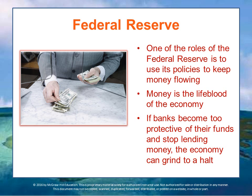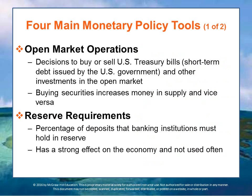Let's look more deeply into the four main monetary policy tools the Federal Reserve uses to manage the money supply: open market operations, reserve requirements, the discount rate, and credit controls. Remember that there's generally a 6- to 18-month lag before these effects show themselves in the economy, because they work at the level of banking transactions, and it takes time for the effects to reach consumers and for companies to adjust their investment plans and forecasts.